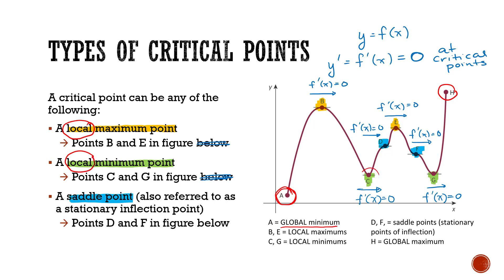Now A is what we would refer to as a global minimum as opposed to local minimum. So when we look at our other minimums that we determined, points C and points G here, those were just local minimums. In other words, they weren't the minimum of the overall function.